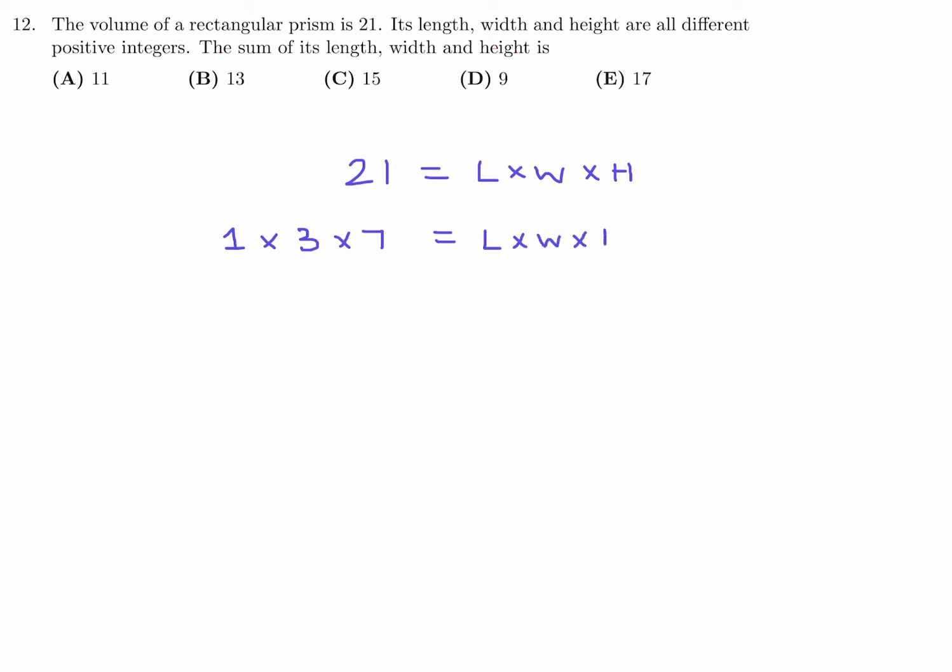And there we go. I've got 3 numbers and they're all different, and they're all positive integers. So this is whatever order you want to put this in - width, length, height, doesn't really matter. They just want the sum. So the sum of L plus W plus H will be 1 plus 3 plus 7, and that is 11. So number 12, the answer is A.